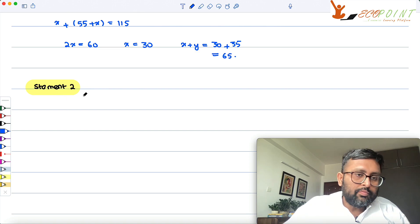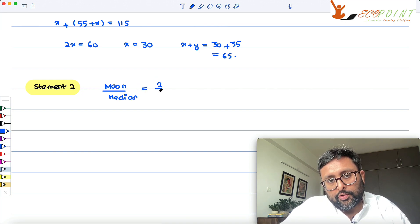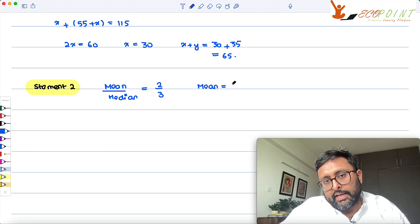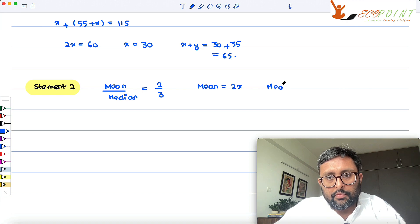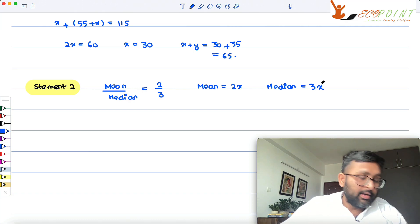Statement 2. Beta, what is given to you? Mean upon median is 2 is 2 upon 3, right? Okay. So I can write mean as 2x, median as 3x, right?